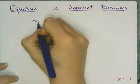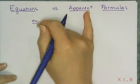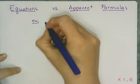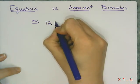So there's really no difference, and the work you use to find an apparent formula is the same as the work you use to find an equation. It's just a slightly different context and it looks a little different. So let's start with what we know.